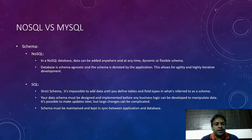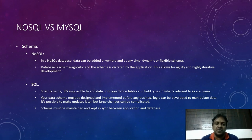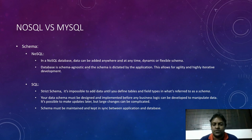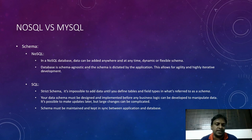Now let's discuss schema. NoSQL data can be added anywhere at any time — it has a dynamic or flexible schema with no fixed schema. The database is schema-agnostic, and the schema is dictated by the application. This allows for agility and a highly iterative development process.